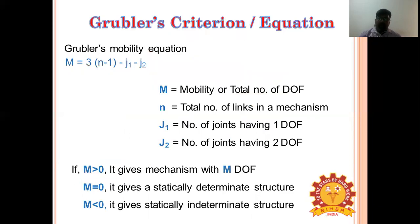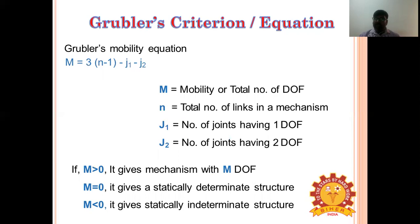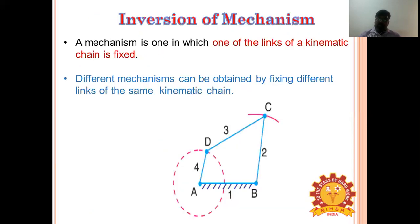Grubbler's criterion or Grubbler's equation is used to find the mobility or degrees of freedom of a given chain. The equation is: M = 3(n - 1) - 2j₁ - j₂, where j is the number of joints with first degrees of freedom and n is the number of links in the mechanism.